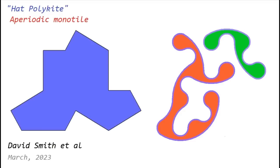In March 2023, David Smith et al. announced to the world the hat polykite. This shape looks a little bit like a hat and it is an aperiodic monotile. In this video we will have a look at aperiodic tiles and see how this shape leads us to these shapes. This is quite exciting because for 50 years people have been looking for aperiodic monotiles.